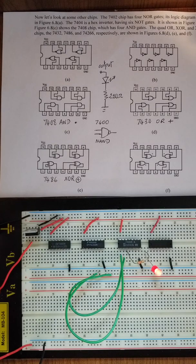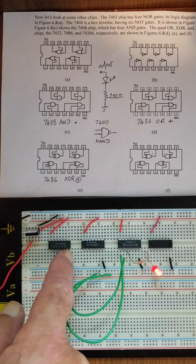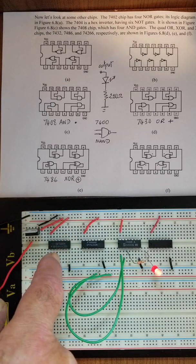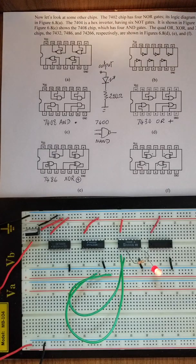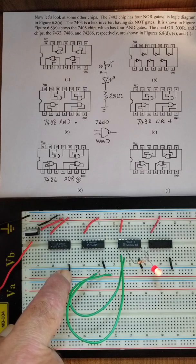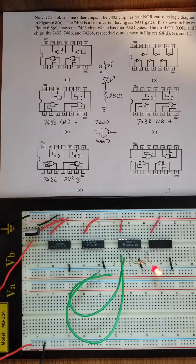On the breadboard, I've already set up three chips: the 7408 which is the AND chip, the 7432 which is the OR chip, and the 7486 which is the exclusive OR chip, plus the unknown chip as the fourth. I've already connected them all to power and ground. The pins go counterclockwise from pin 1, and on a 14-pin chip, pin 14 is VCC at 5 volts. These chips are TTL and require 5 volts to function properly. Pin 7 is ground. All grounds and powers are connected, because we tend to forget to power the chips for the gates to work properly.